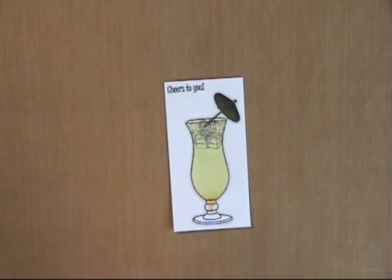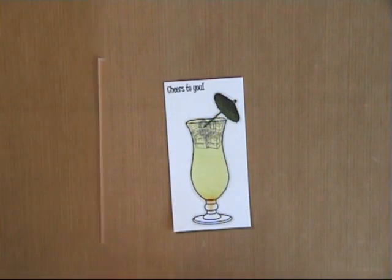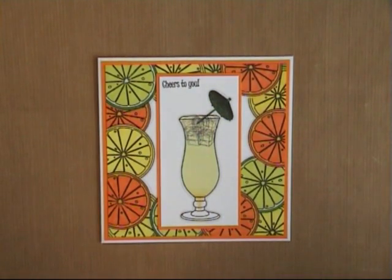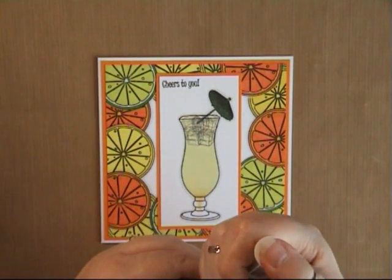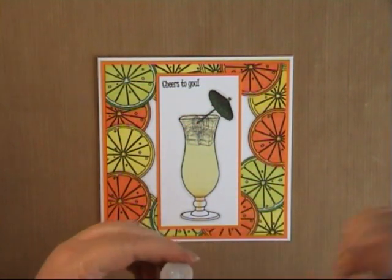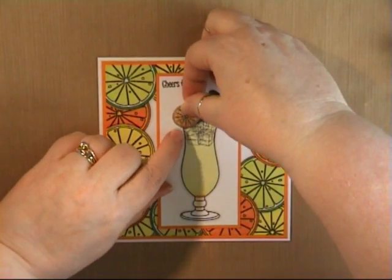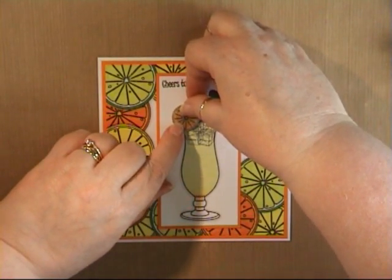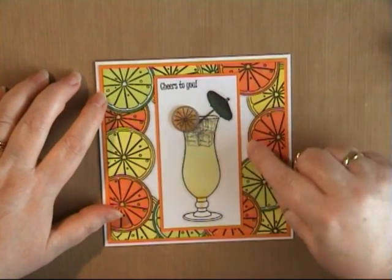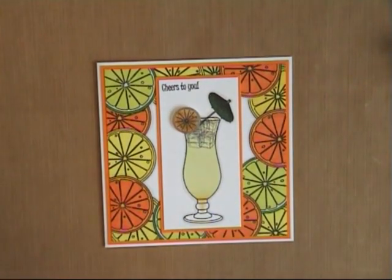Here's one I colored earlier and now we're going to matte and layer our card. So now our card's been matted and layered, we need to just add our piece of shrink plastic. So you could either use a glue dot or some silicone glue. And there we have the finished card.